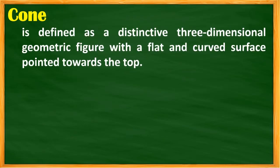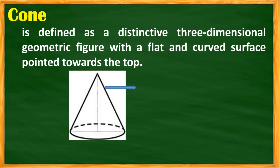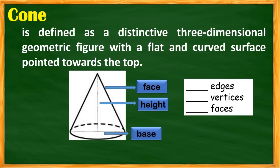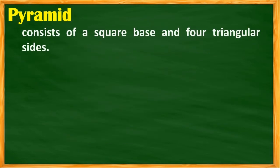The cone is a three-dimensional geometric figure with a flat circular base and a curved surface that comes to a point at the top. It has zero edges because of its curved surface, one vertex at its apex, and two faces: the circular base and the curved lateral surface.